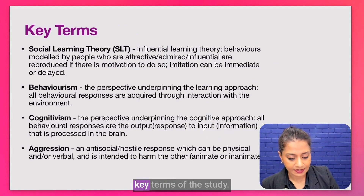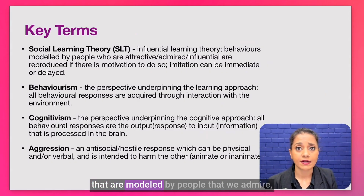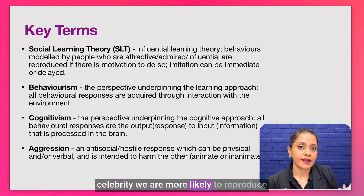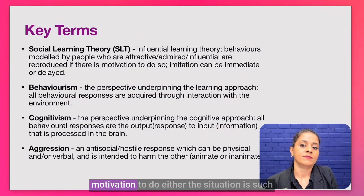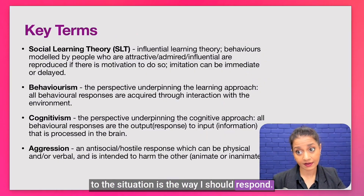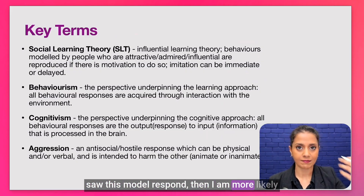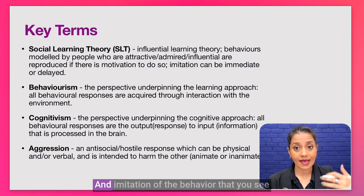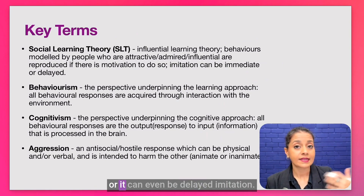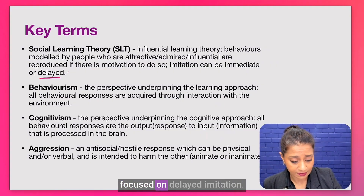Now for the key terms. Social learning theory is an influential learning theory in which behaviors modeled by people we admire or who have influence over us — an elder sibling, a celebrity — are more likely to be reproduced when the environment offers motivation to do so. Imitation of behavior seen in a model can happen immediately in the same social setting, or it can be delayed. Importantly, Bandura's study focused on delayed imitation.